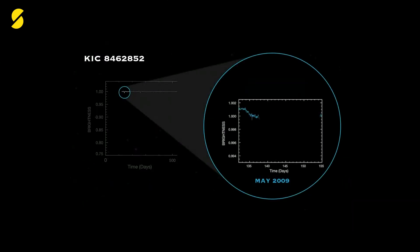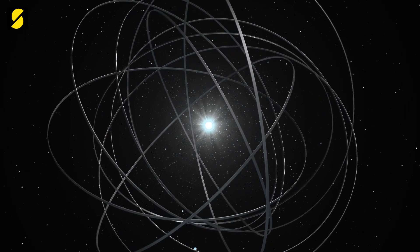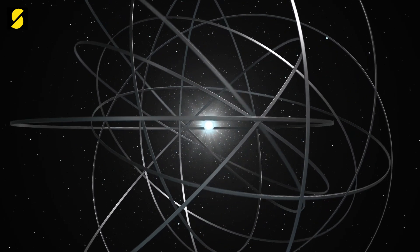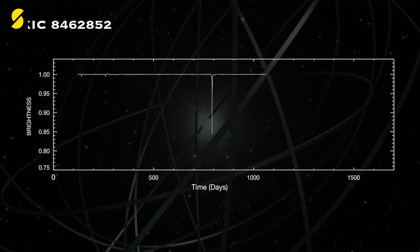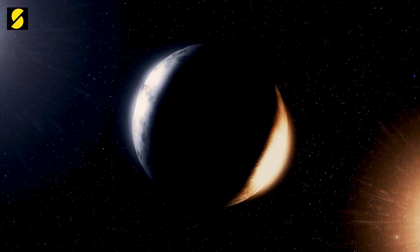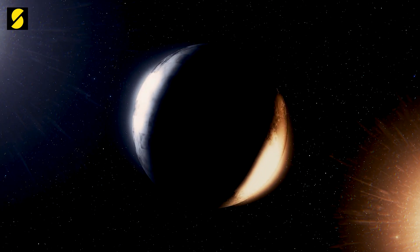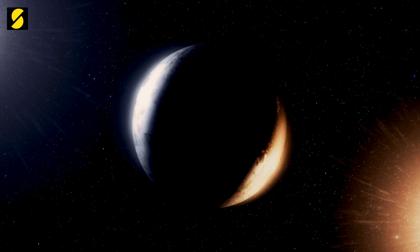However, this star's brightness varied by an unprecedented 22%. That's a massive object orbiting it, and its sheer monstrosity tells us that it cannot be a planet. And what's even more startling is the speed and randomness of its flickering. Scientists have tried and tried to come up with a natural explanation for what's happening around the star.